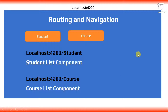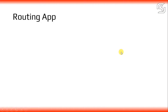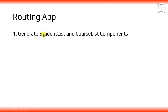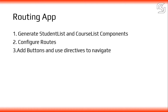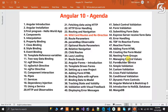So the first thing we need to do is create a student list component and a course list component - two components. After creating the components, we configure the routes. After configuring, the third step is to add buttons and use the routing-related directives, so that clicking a button navigates to the particular component.